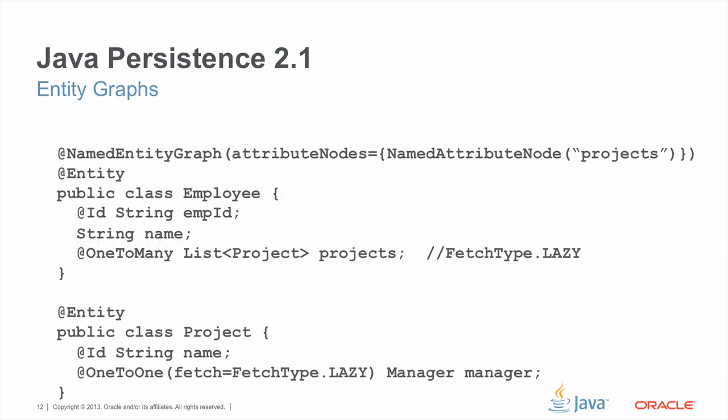In this example, we're defining an entity graph for the class employee. The entity graph annotation is applied to the entity class that's going to be the root of the entity graph. We're specifying that when you pass this entity graph to a query or find operation, in addition to its primary key — which is always retrieved — we're going to be retrieving the named attribute node projects. Note that projects by default is fetch type lazy, so even with a default entity graph it would not normally be retrieved. And in the entity project, because the one-to-one with manager is fetch type lazy, we won't be retrieving it with this entity graph. We will, of course, be retrieving the project name, which is the primary key.